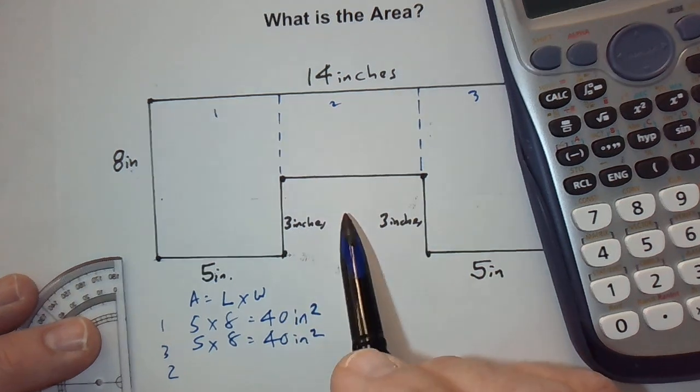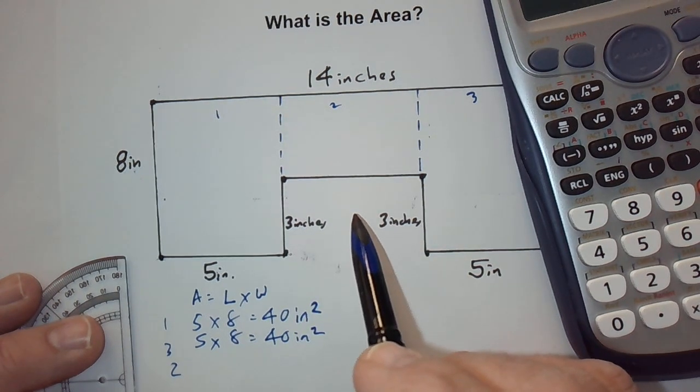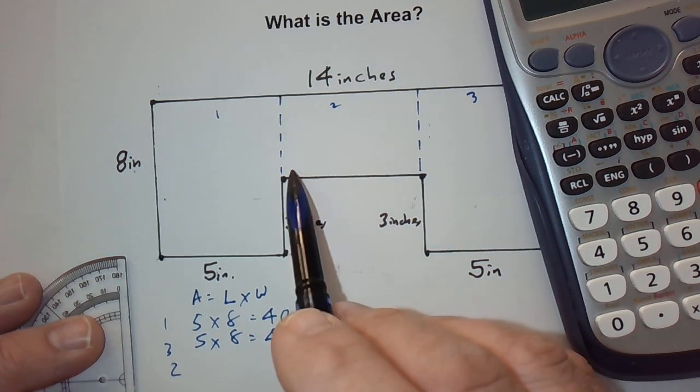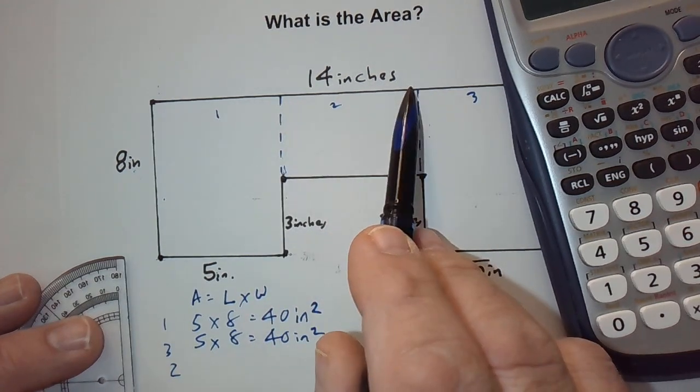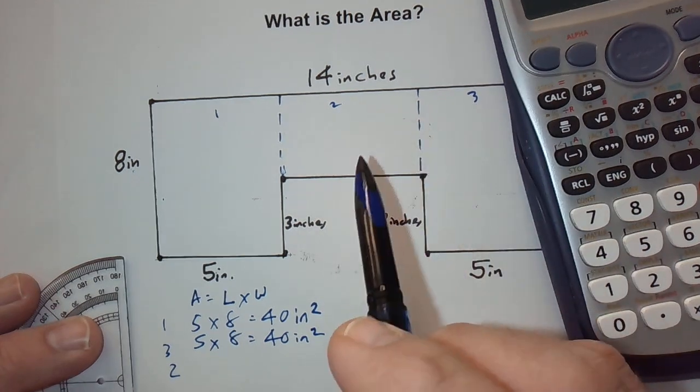Now, we have this last one in the middle. We have to figure out that area. Well, we don't know, for example, this distance from here to here. It is a rectangle, nor do we know this distance from here to here. So, we have to kind of figure it out.